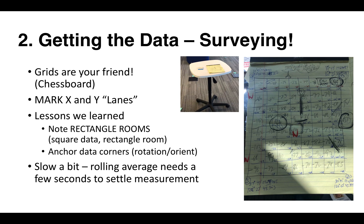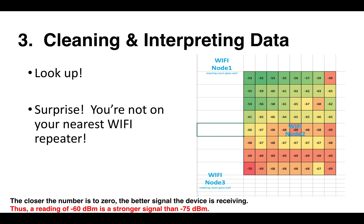Slow down — it's a rolling average and needs a few seconds to settle. The pencil on that paper is our cell phone data, and the pen is the Wi-Fi data gathered from our survey. After cleaning it up, you can see our friend Excel here with the data readings. The higher amplitude negative numbers indicate a worse signal, and the greens indicate a better signal.